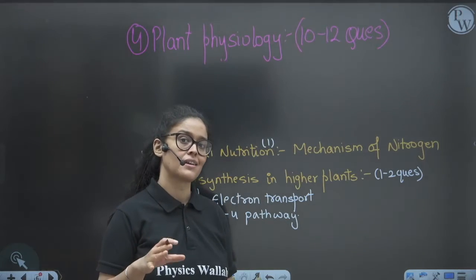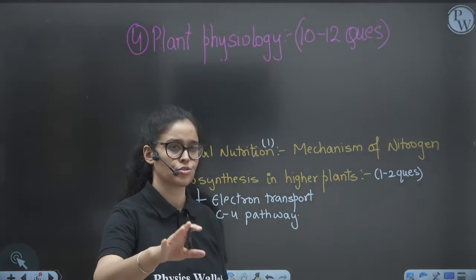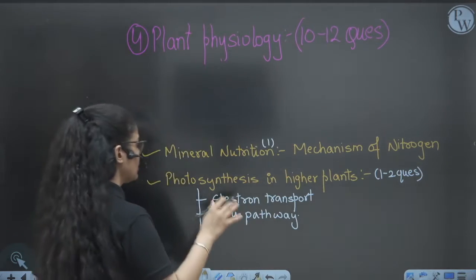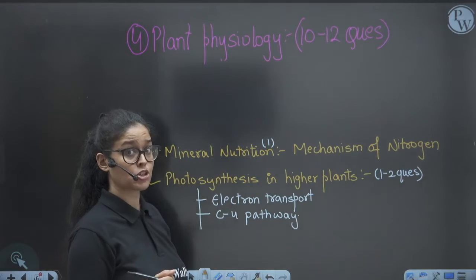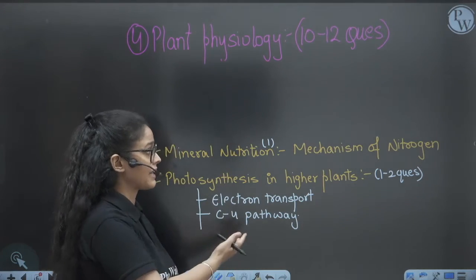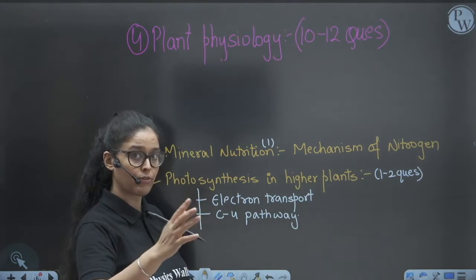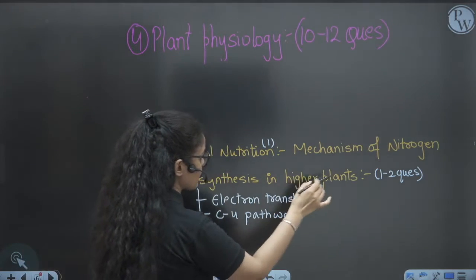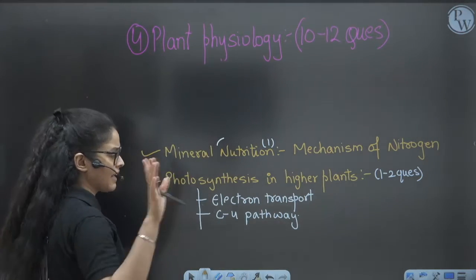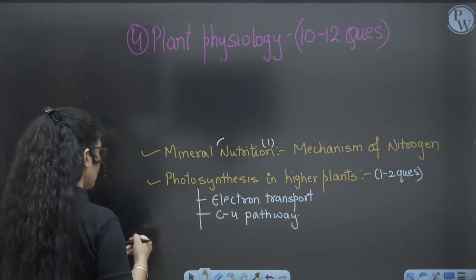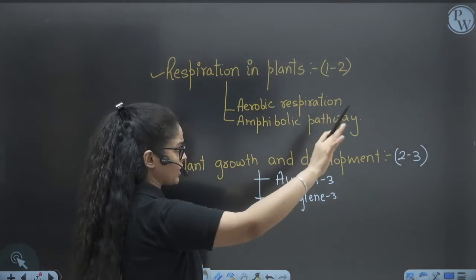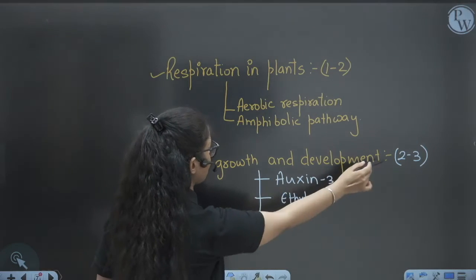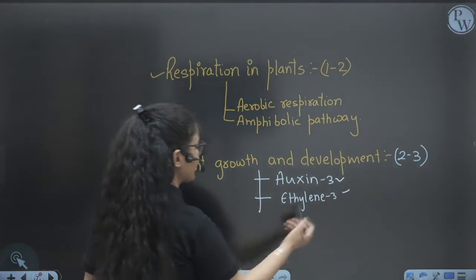Plant Physiology: on average they ask eight to twelve questions, approximately ten to twelve per year over five years. This year alone fifteen questions came from this unit. Mineral Nutrition and Mechanism of Nitrogen Fixation are important. Photosynthesis in Higher Plants: one to two questions; Electron Transport Chain and C4 Pathway are important. Respiration in Plants: one to two questions on average; Amphibolic Pathway is the hottest topic. Plant Growth and Development: two to three questions, especially from Auxin and Ethylene.